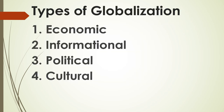We have four types of globalization: economic globalization, informational, political, and cultural. Economic globalization is when countries trade with others and have few trade barriers. Informational globalization is when information and ideas can easily pass between people within their own country and between different countries, including access to the internet and social media networks.